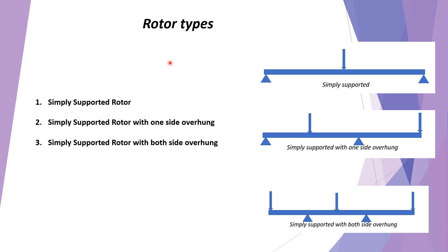As mentioned, the rotor has three types. The first is the simply supported rotor, where bearings are attached at both ends. The most important point is that the bearings are considered rigid, which means the rotor is flexible. This is the simply supported rotor where bearings are at both ends and loads are in between.